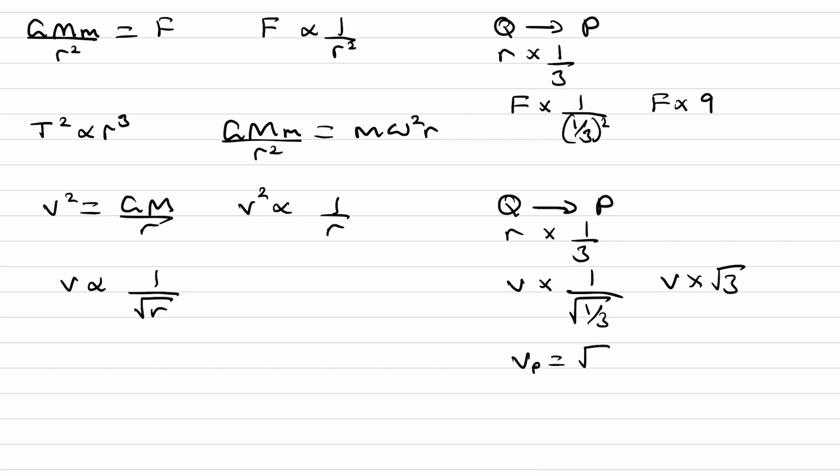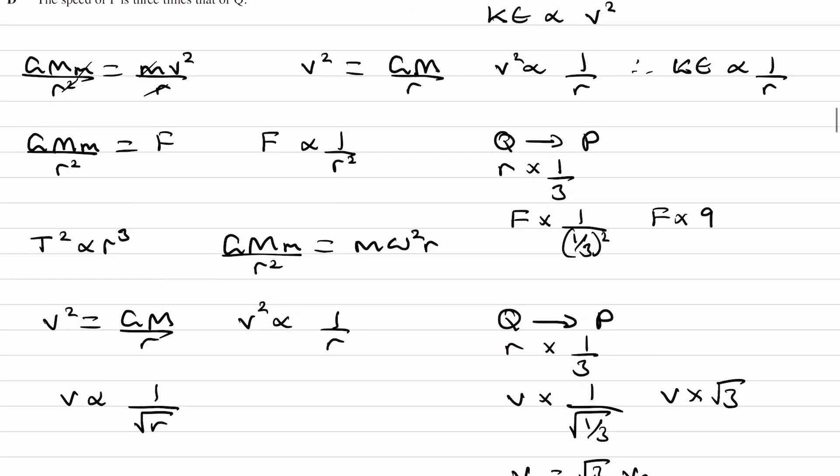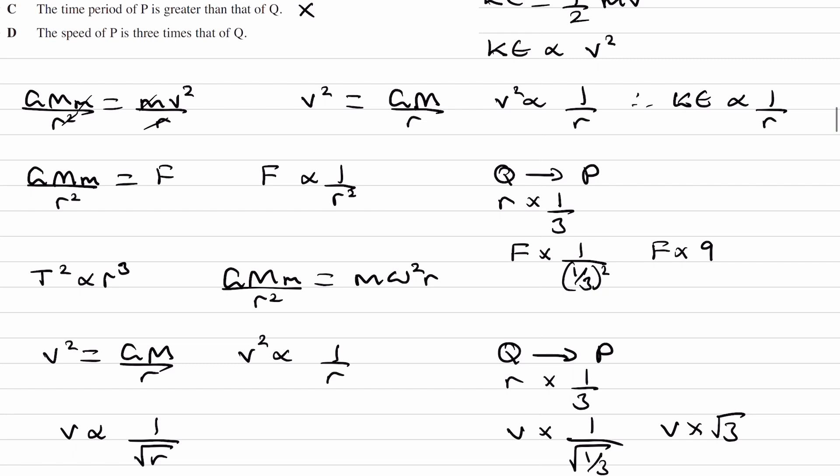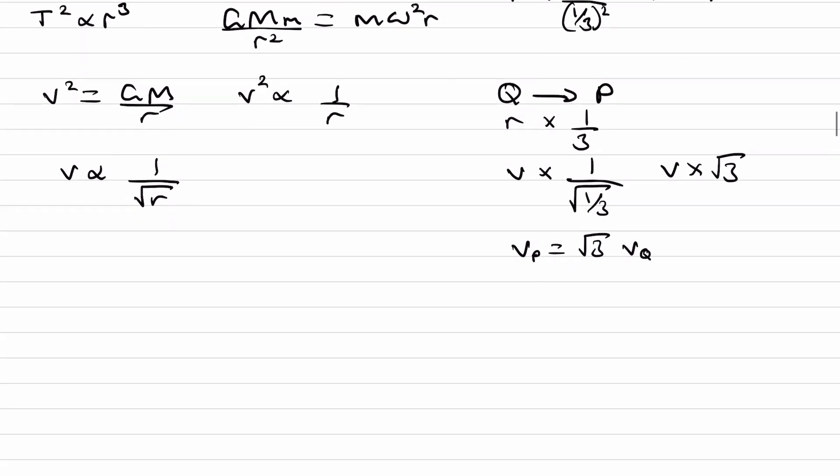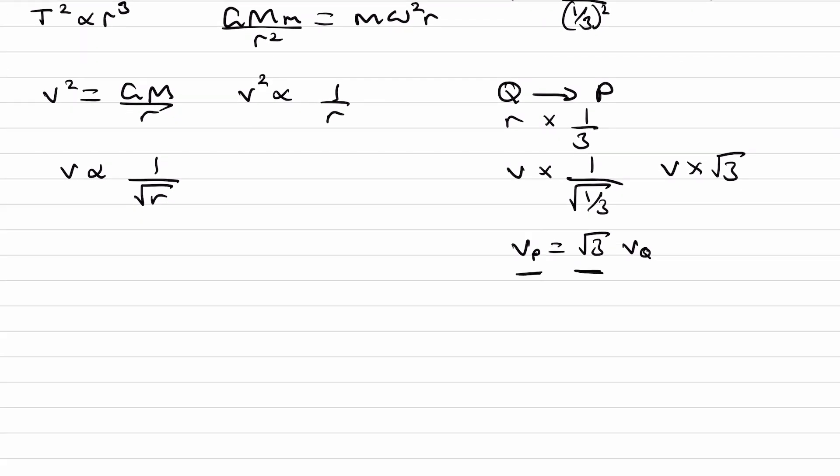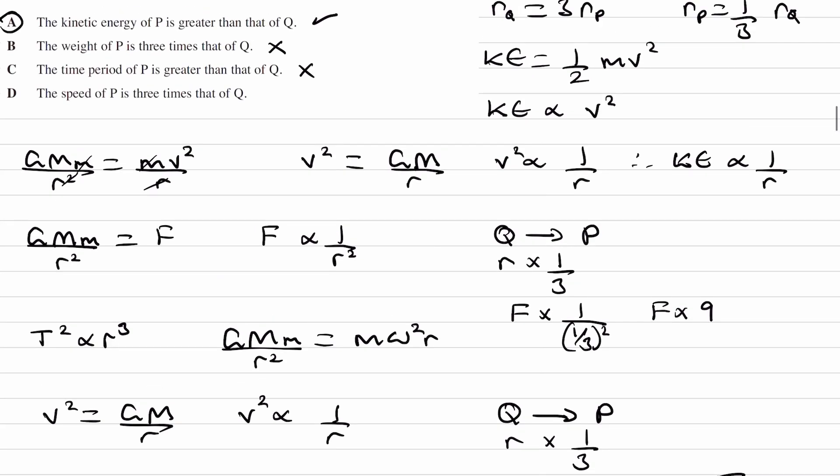And we see that V squared is proportional to 1 over R, so VP is root 3 lots of VQ. And then going up to the option, it says the speed of P is three times that of Q. The speed of P is root 3 times that of Q. And that's why it's not D.